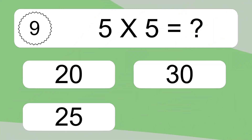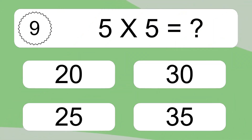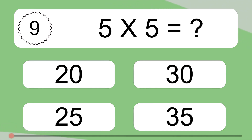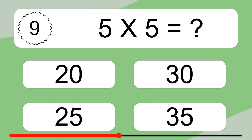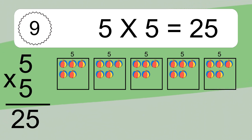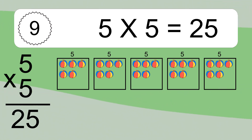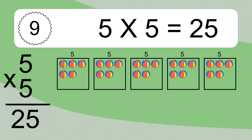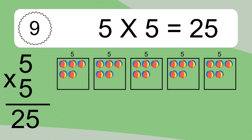Five times five equals what? Five times five equals 25. We have five boxes and each box has five colorful balls inside. If you count all the balls in all the boxes together, you will have five times five balls. This equals 25 balls.